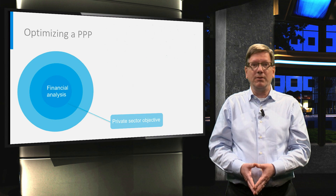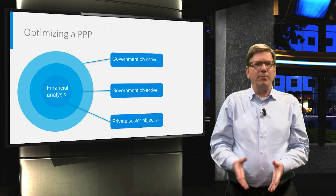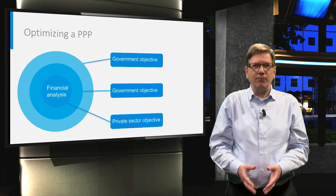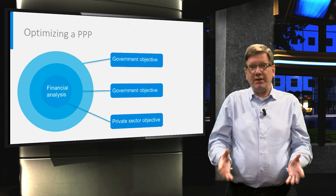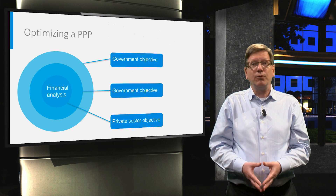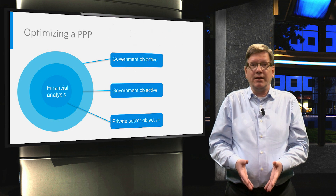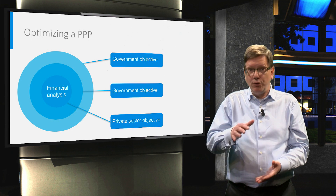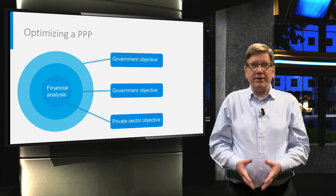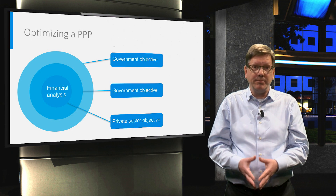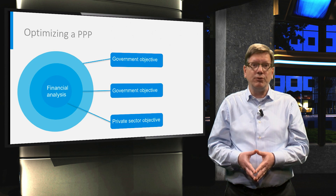Here is another example: a private consortium builds a ministry building, the government will be the tenant and pay rent for a period of time — this rent is the project revenue. The government wants the building equipped with low-emission LED lighting and other measures to reduce power consumption and CO2 emissions, but installing that is more expensive for the private party; it increases project cost and reduces financial return.